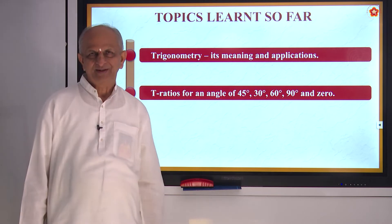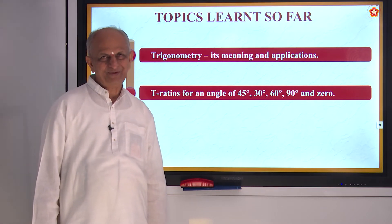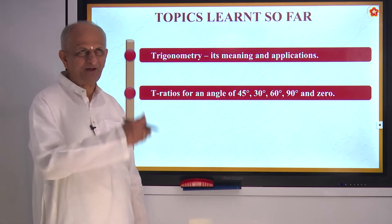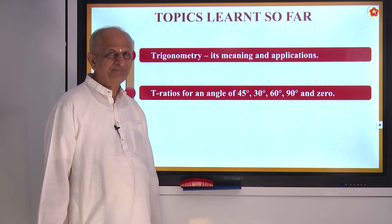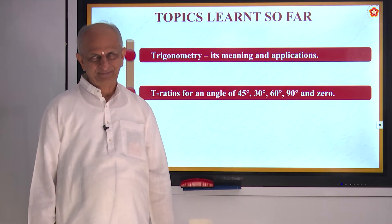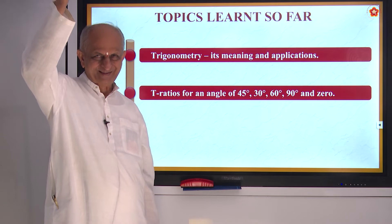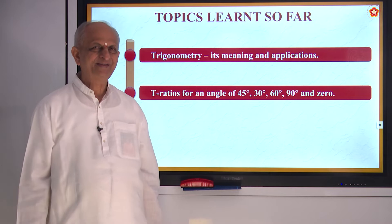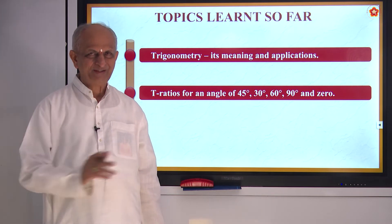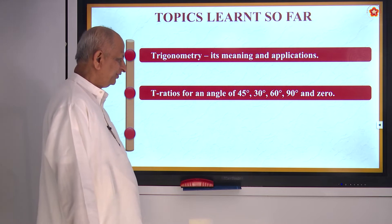Our study of trigonometry started with its meaning. 'Tri-gon-metri' — 'tri' means three, 'gon' means sides, 'metri' means measure. So trigonometry means the measure of the sides of a triangle. We also studied about some of the applications of trigonometry, like finding the heights of hills, towers, buildings, and the distance between the two banks of a river or between two places. So many applications are there — let us see some more today.